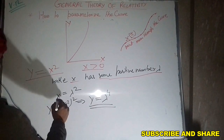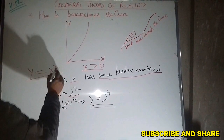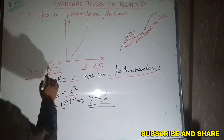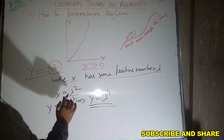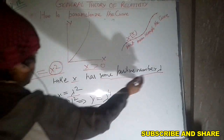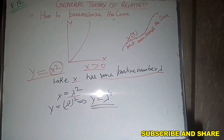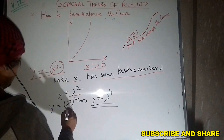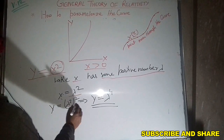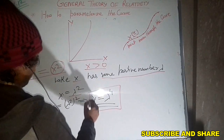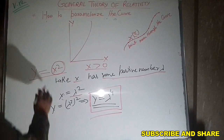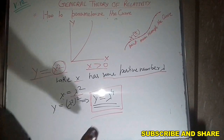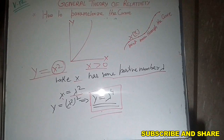Suppose x has some real number lambda. So x is equal to lambda, and since y = x², we get y = lambda². Now substituting this value of x: y = lambda², and x = lambda. This is the parameterization of this parabolic equation — this is how to parameterize any curve.